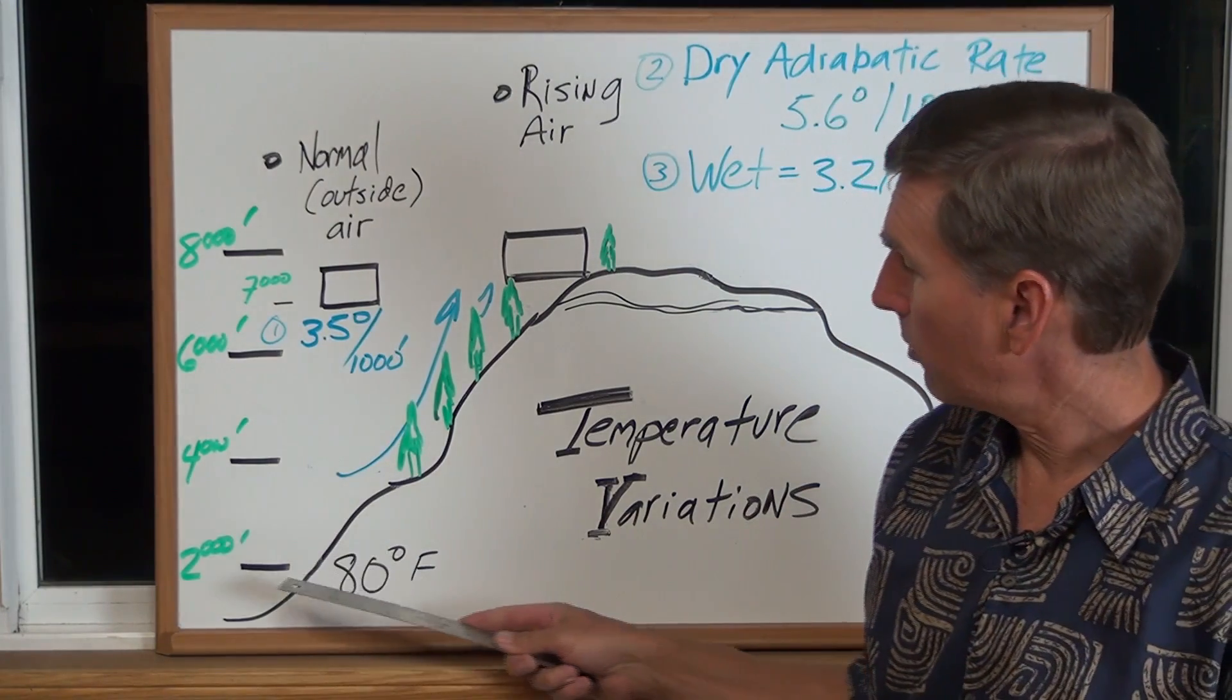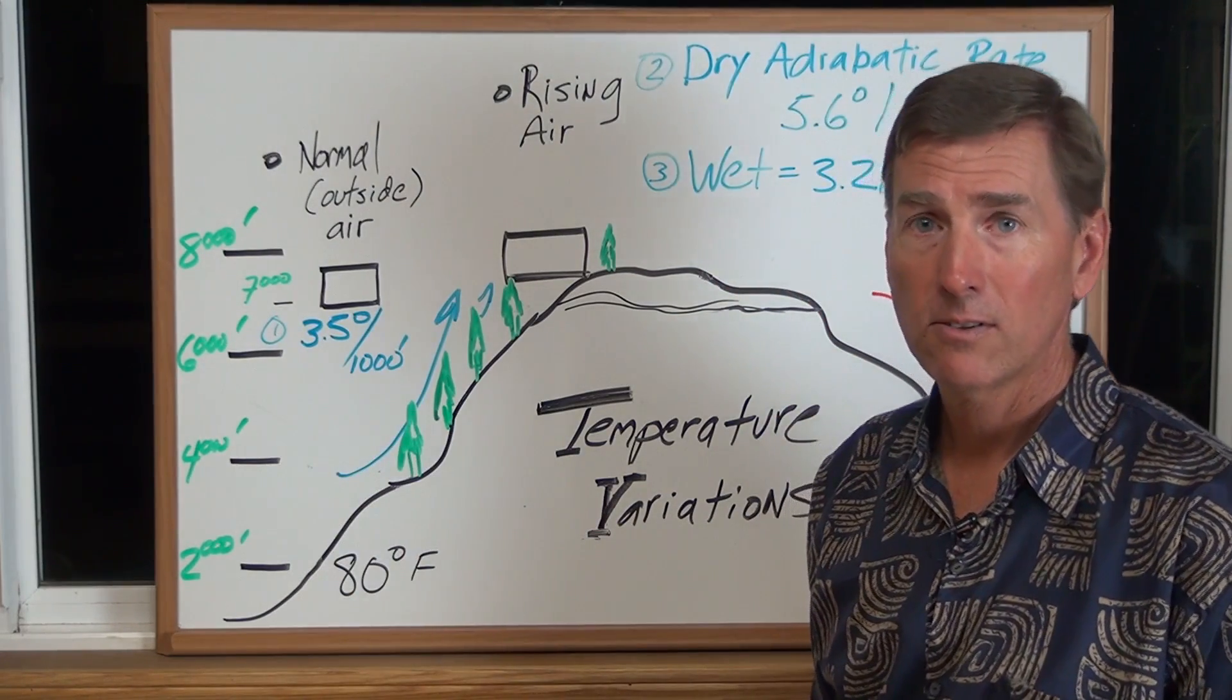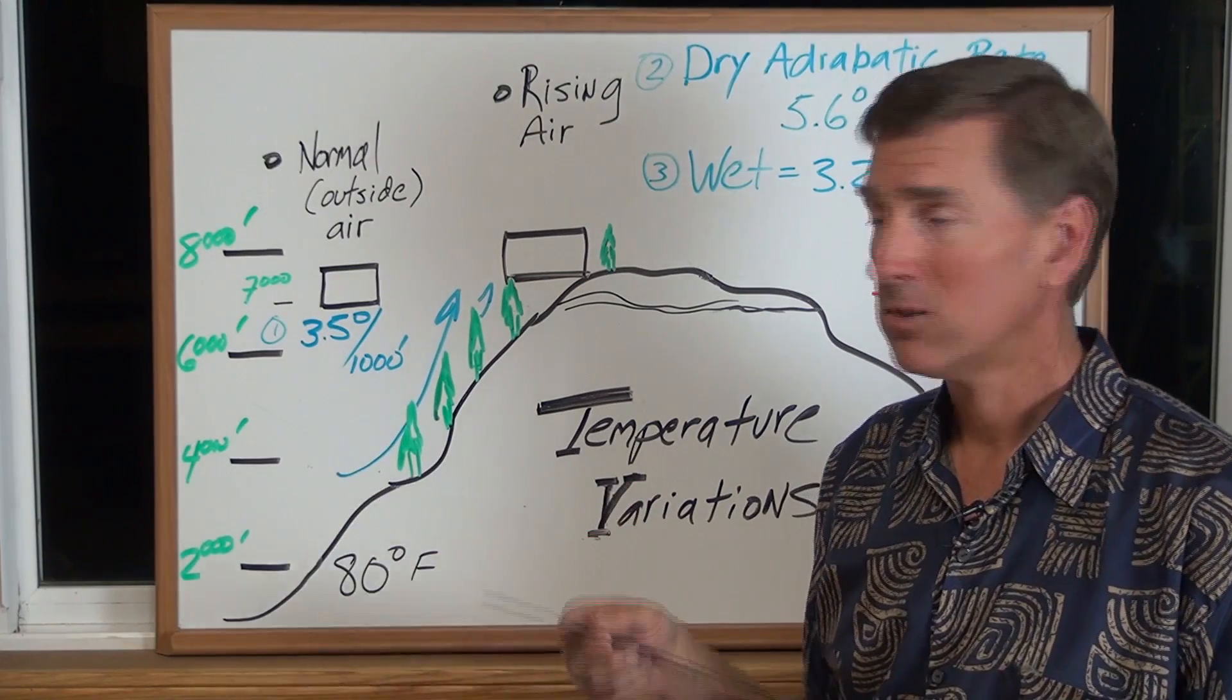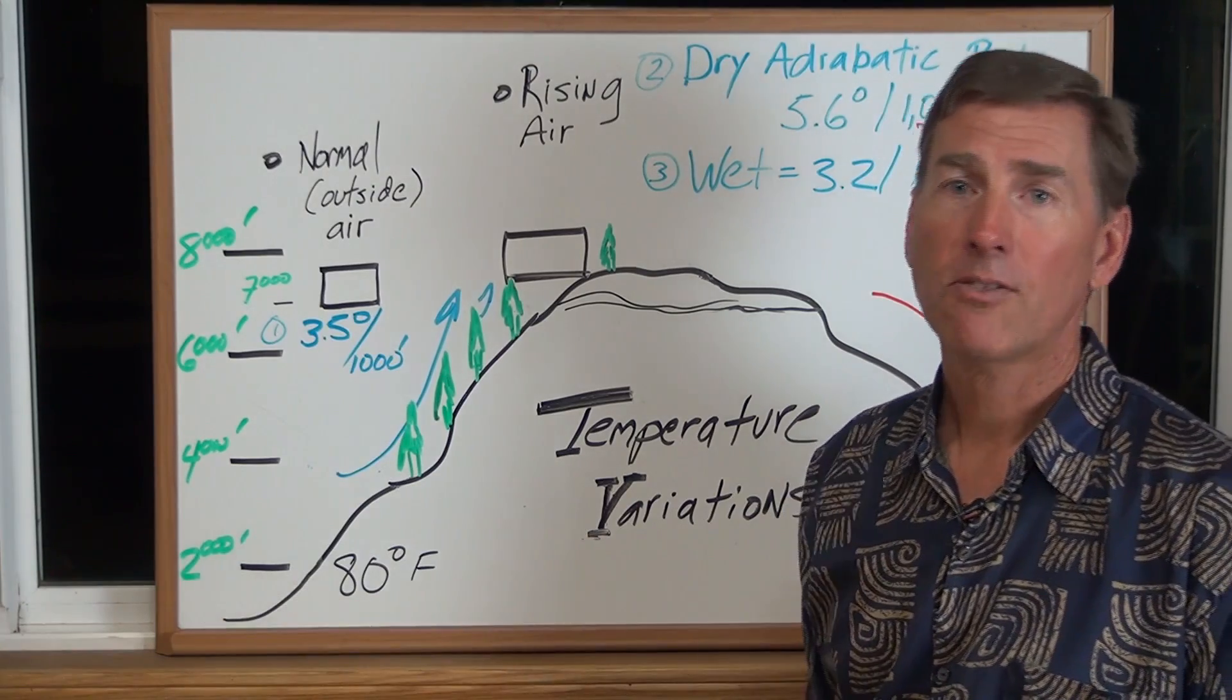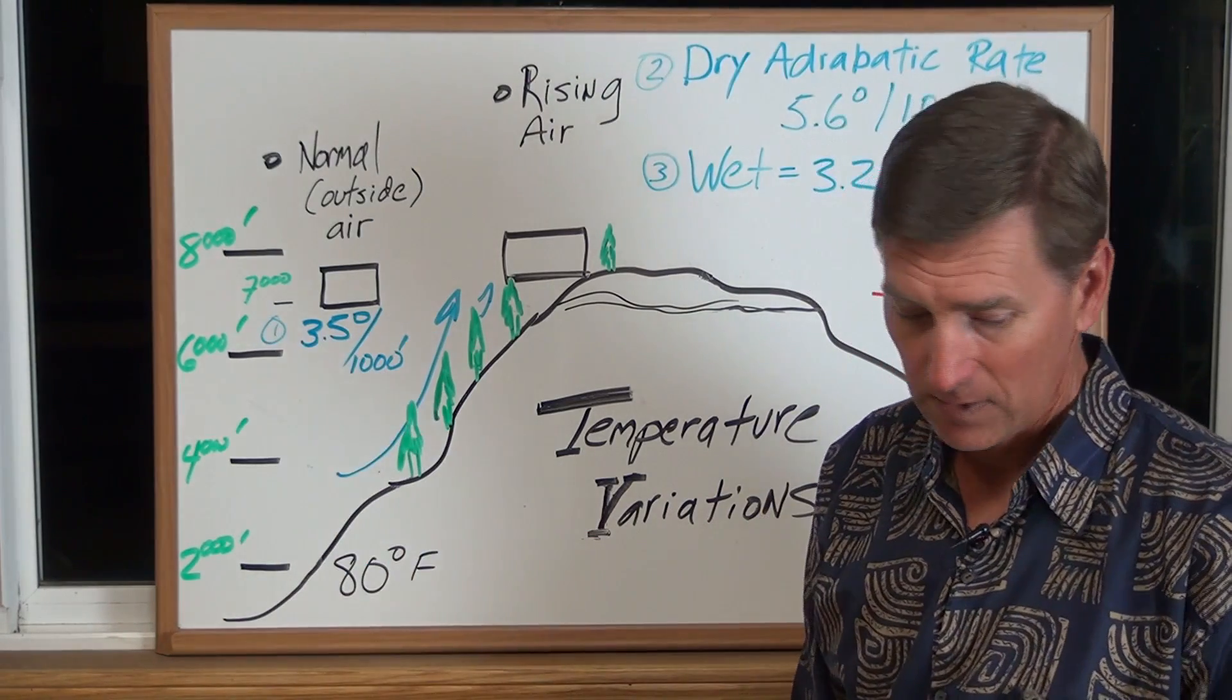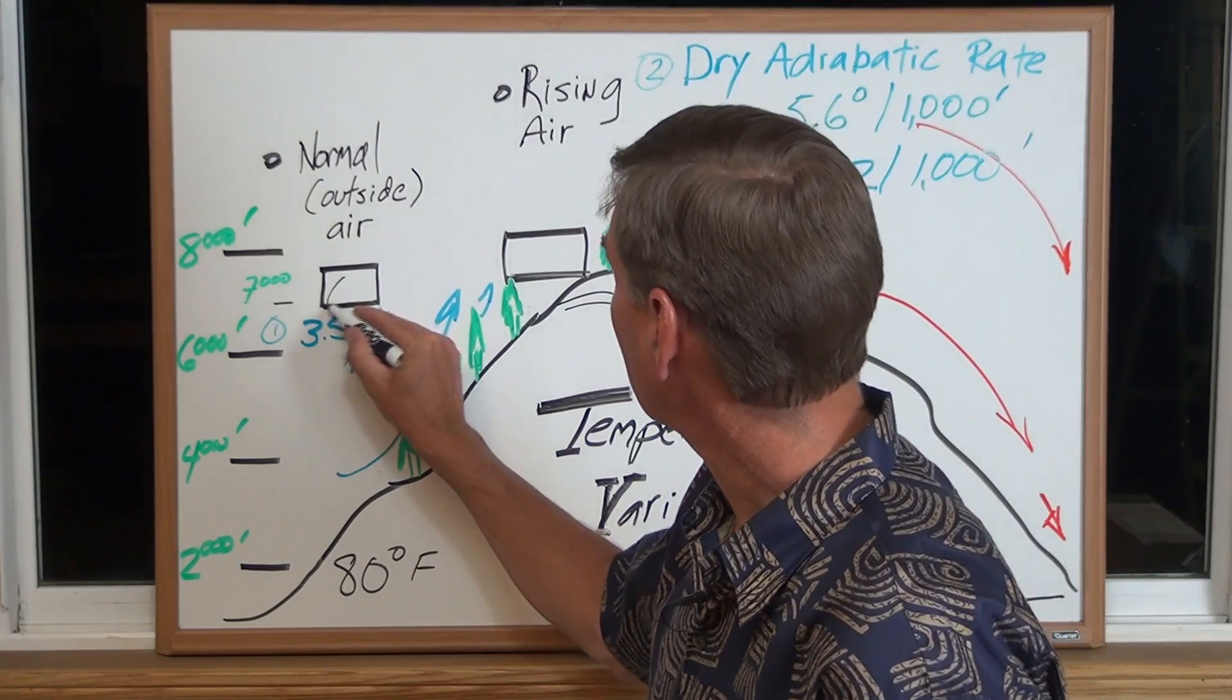So let's do this one real quick here. If we're at 2,000 feet and we're at 80 degrees and we go up, let's say, 1,000 feet, it's going to drop 3.5 degrees. We go up 2,000 feet, it's going to drop 7 degrees. If we go up to, let's say, 6,000 feet, another way to do it is you just say 6,000 subtract 2,000, that equals 4,000 feet, divide that by 1,000 and you get 4 units, 4 units of 1,000. Then you just multiply 4 times 3.5, it's pretty easy. That's 14.